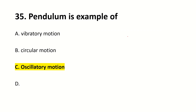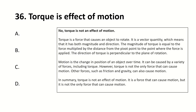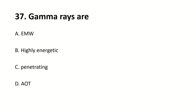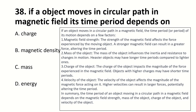Pendulum is an example of oscillatory motion. Torque is the effect of force — no, torque is not the effect of motion; it is a force that can cause rotational motion. Gamma rays — right answer is D, it is all energy. If an object moves in a circular path in a magnetic field, its time period depends on — there is no answer; what is the answer? Comment and tell us.